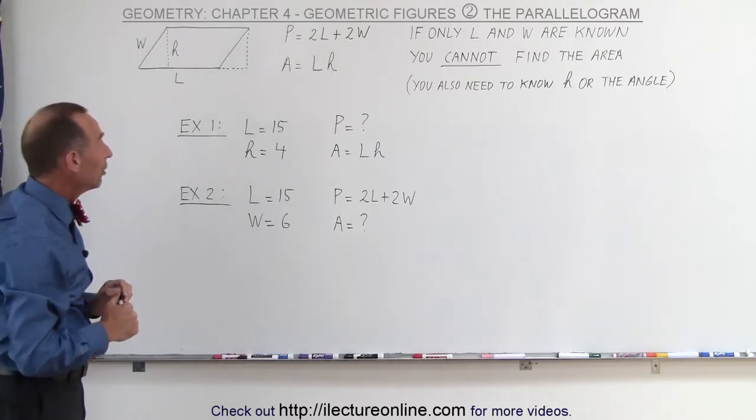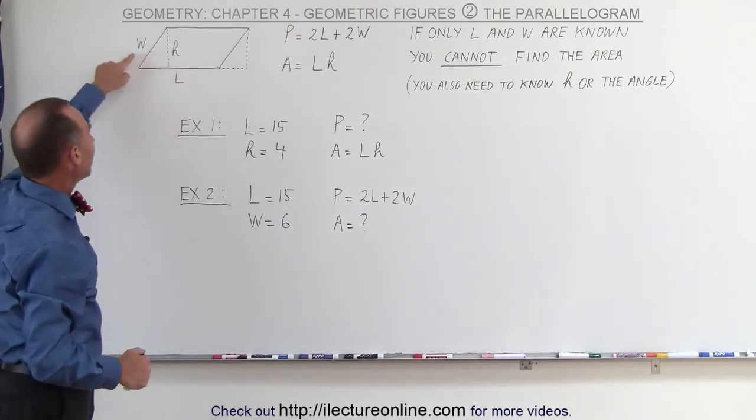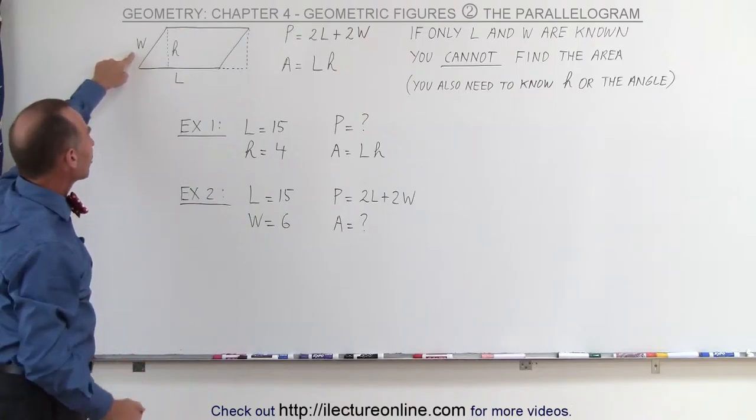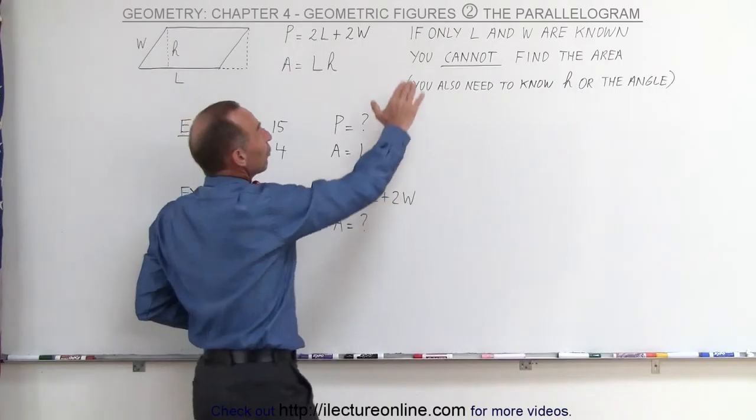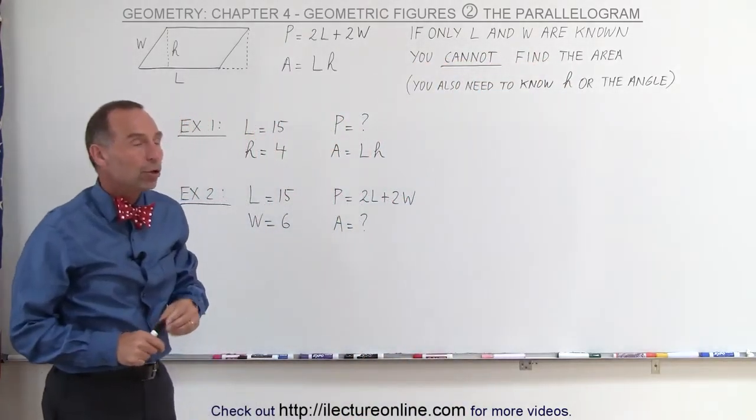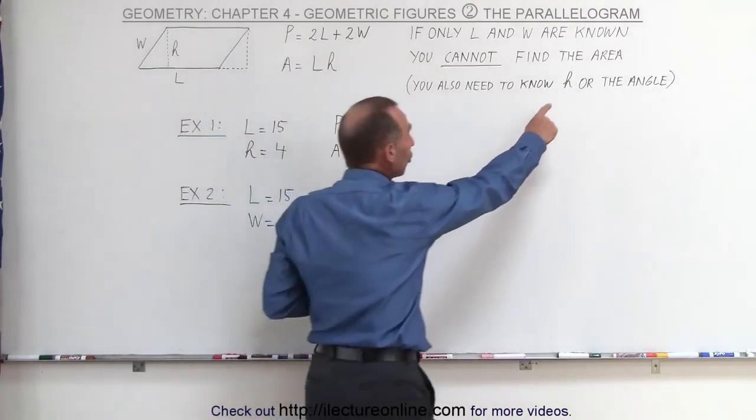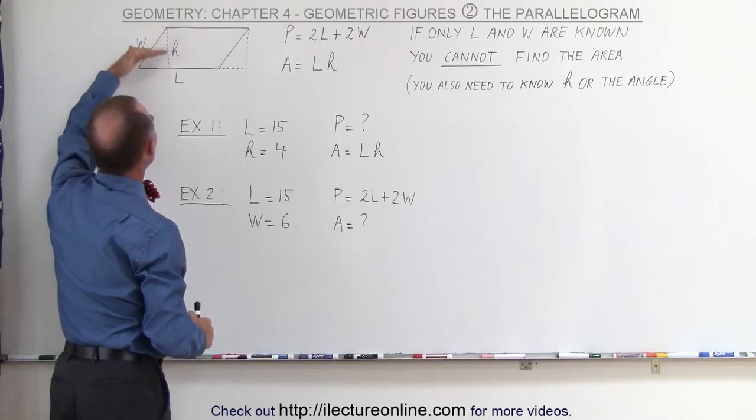Now, you have to be cautious here because if they only give you the length of the long side and the length of the short side—in this case we call it W—you cannot find the area. If only L and W are known, you cannot find the area of the parallelogram. You must also know H or the angle between W and L.